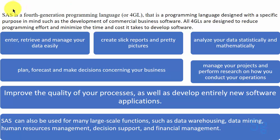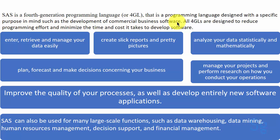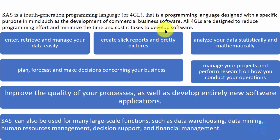Let us go through the definition of SaaS. SaaS is a 4th generation programming language — that is, a programming language designed with a specific purpose in mind, such as the development of commercial business software. All 4th generation languages are designed to reduce programming effort and minimize the time and cost it takes to develop software.